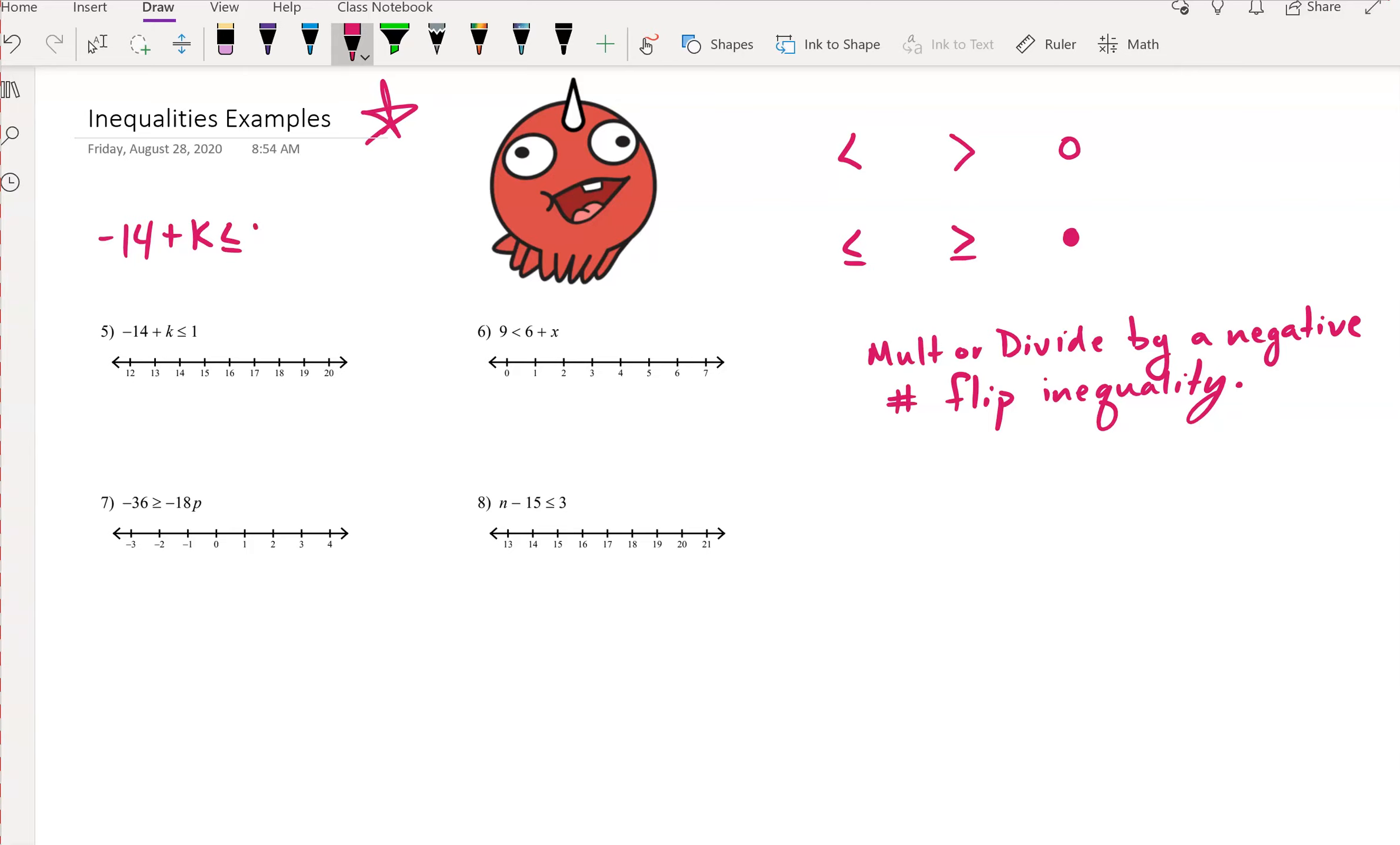The only difference is this scenario right here is where you multiply or divide by a negative number. Here we are adding 14 to get k by itself. So we have k is less than or equal to 15. So we plot a solid circle at 15. And we want to shade those values that are less than, so we would shade that way.